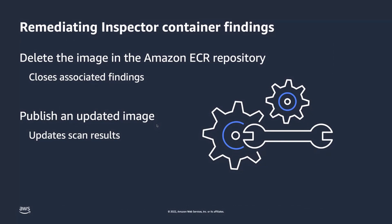To remediate container findings identified by Inspector, you can delete the image from Amazon ECR, which immediately closes all associated findings and removes them from the active findings view. You then do the work to patch the container image and publish a new version. That new version is treated as a brand new container image in ECR — Inspector will repull and rescan it, reporting the updated vulnerability state or reporting no vulnerabilities if everything has been addressed.